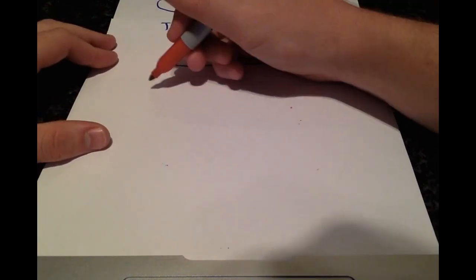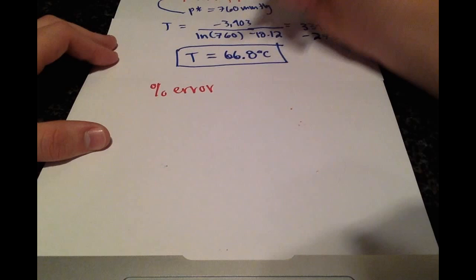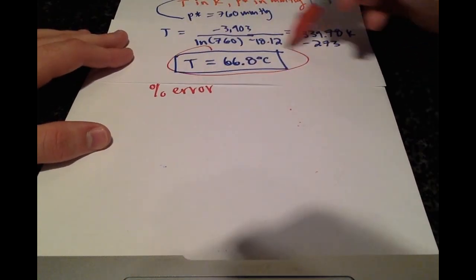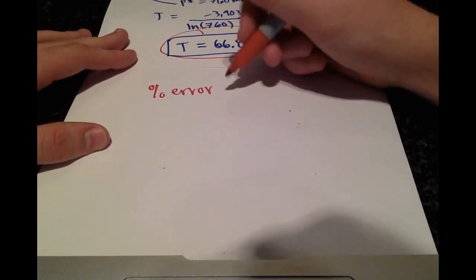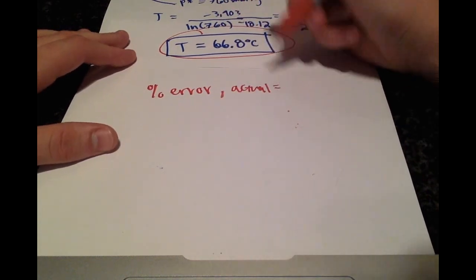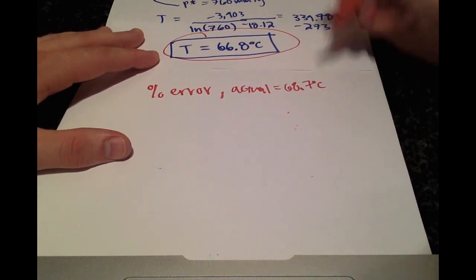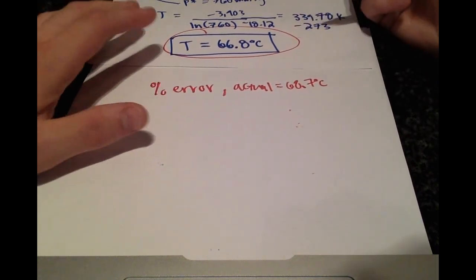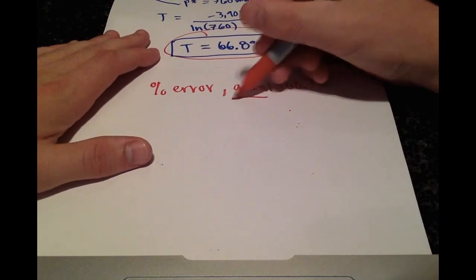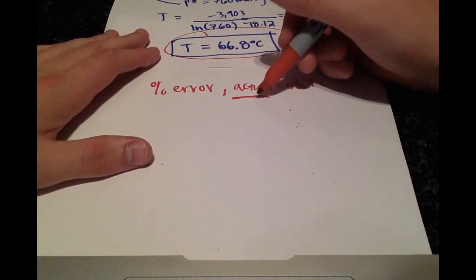For the last part, we want to calculate the percent error using our approximation. We're given the actual value of 68.7 degrees Celsius. The formula for percent error is the actual value minus the approximation, divided by the actual value, times 100%.